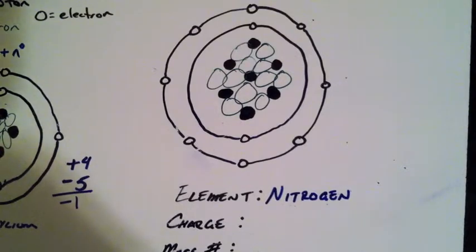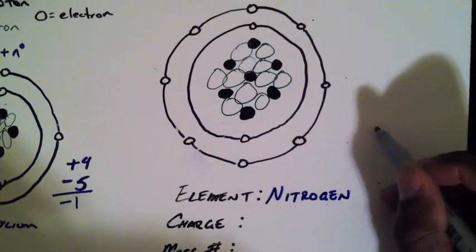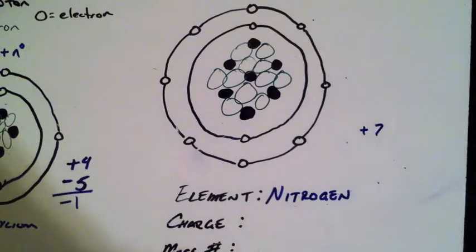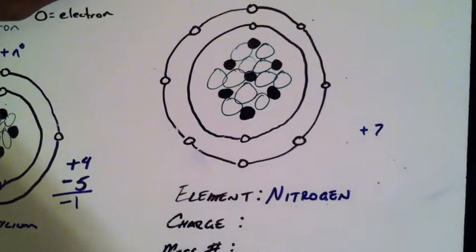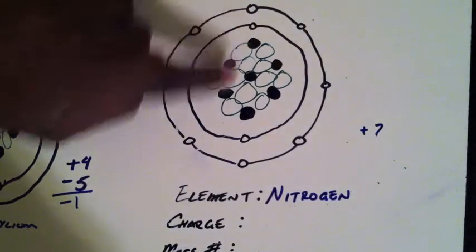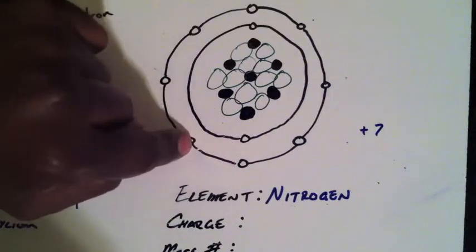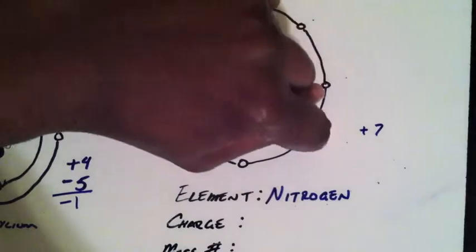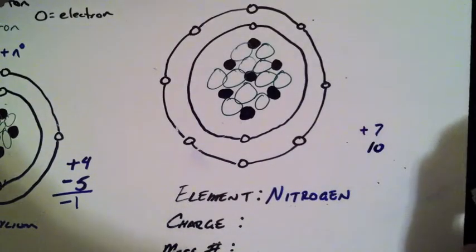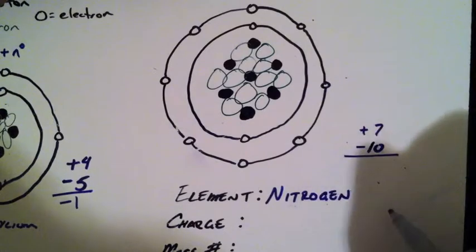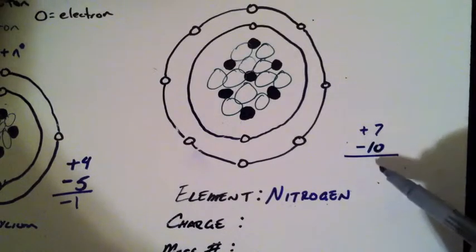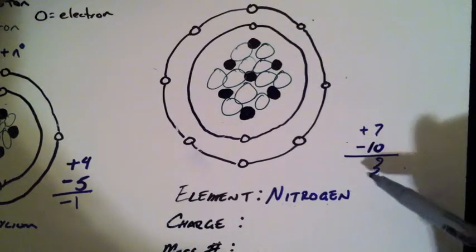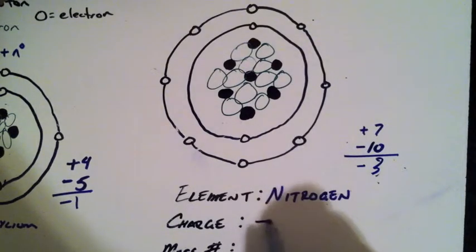To get the charge I'll count the protons and the electrons. I already know that I have seven positively charged protons in the nucleus. Counting the electrons: one, two, three, four, five, six, seven, eight, nine, ten — I have ten electrons and they are negatively charged. I have three more electrons than protons, so my charge is negative three.